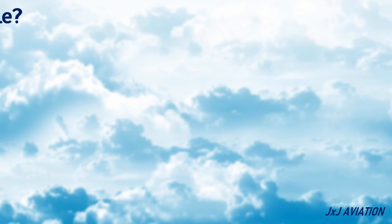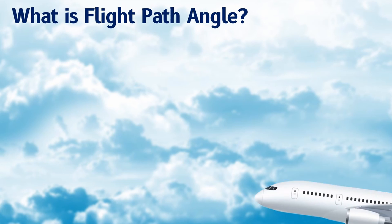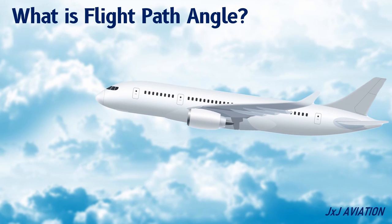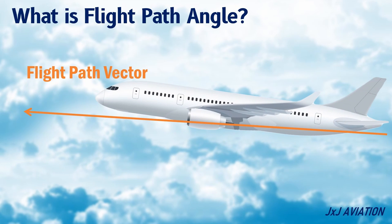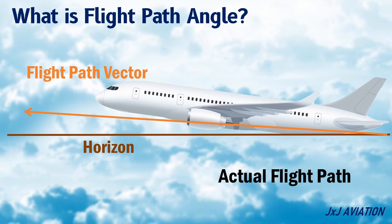What is flight path angle? This is defined as the angle between the flight path vector and the horizon. This is the actual path in which an aircraft is flying.